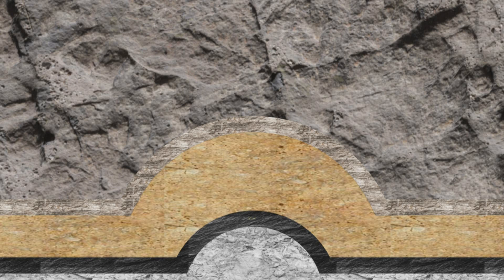Hydrocarbons will migrate continuously as long as the overlying rocks are permeable. For hydrocarbon accumulation to exist, hydrocarbons must face an impermeable rock, or a seal rock, which prevents further migration. This is known as a trap rock. Conventional reservoir rocks must be overlaid by this trap rock to contain hydrocarbons within.